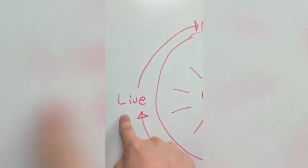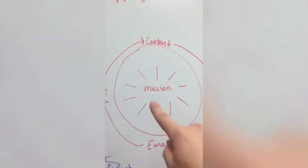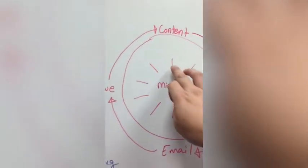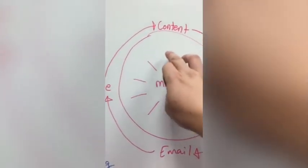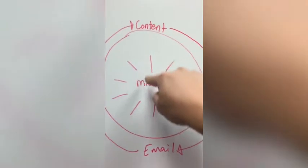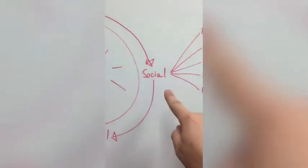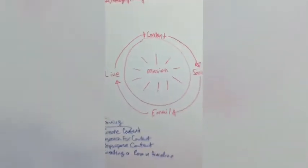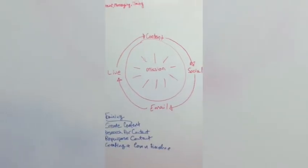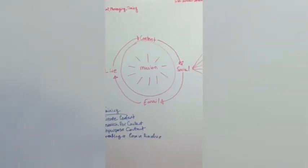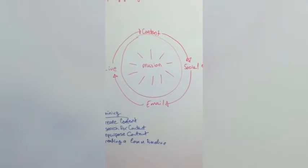And then you have a live strategy. When you have the mission at the center, you create content — these are really supposed to be arrows going out. You create content that reflects the mission. You run social reflecting the mission. That's really what you want to go after in any communication or marketing. Everything comes back to the mission.